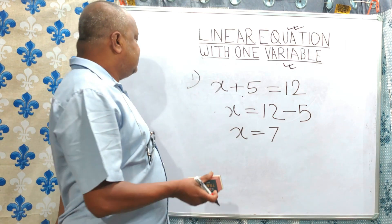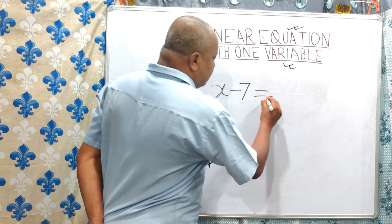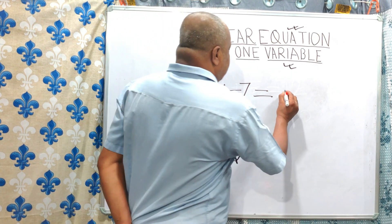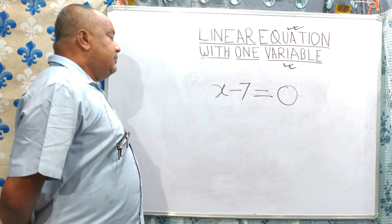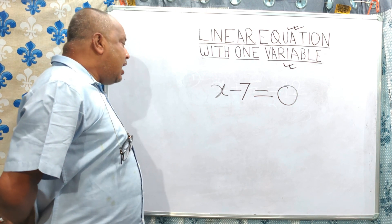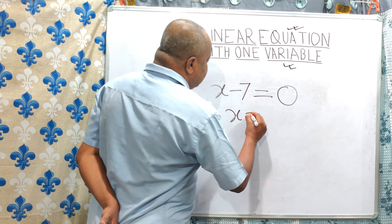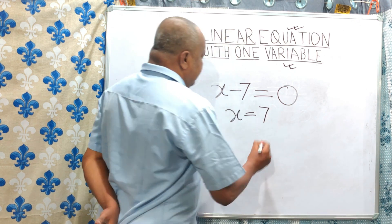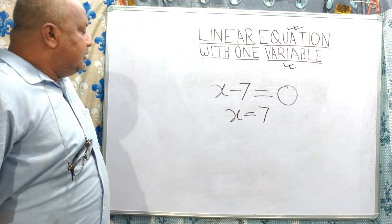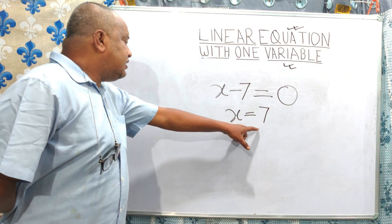Next comes the second problem: X minus 7 is equal to 0. Zero is also a constant number. Previously, plus sign was converted to minus. Now, minus sign is converted to plus. So minus 7 is shifted from left-hand side to right-hand side, and it becomes plus 7. Therefore X equals 7. The value of X is 7 on this condition; in other conditions, the value of X may change.